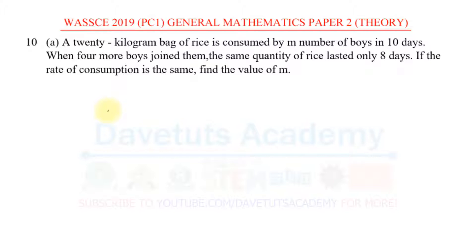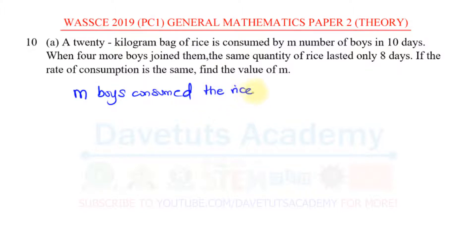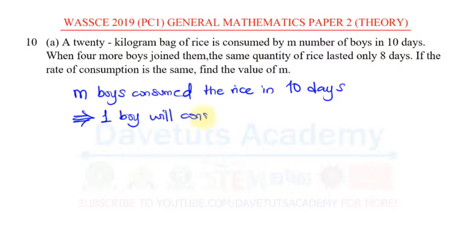Let's interpret the question. M boys consumed the rice in 10 days, meaning that one boy will consume it in 10M days.